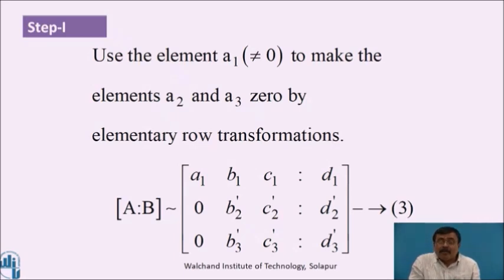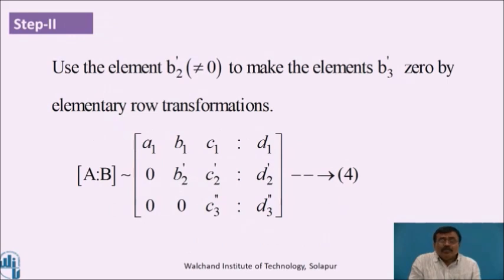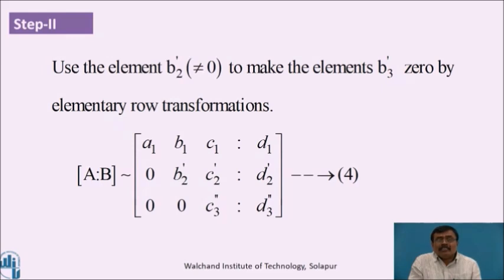Applying the appropriate row transformation, the augmented matrix [A|b] becomes: a1, b1, c1, d1; 0, b2', c2', d2'; 0, b3', c3', d3'. In step 2, use element b2' (not equal to zero) to make element b3' zero by elementary row transformation. The augmented matrix [A|b] becomes equivalent to: a1, b1, c1, d1; 0, b2', c2', d2'; 0, 0, c3'', d3''.